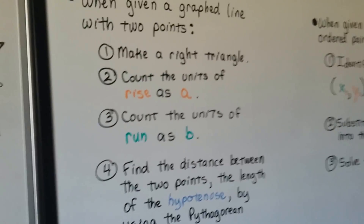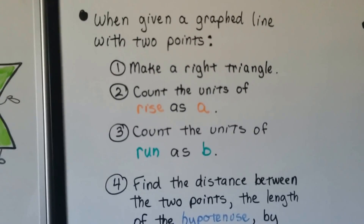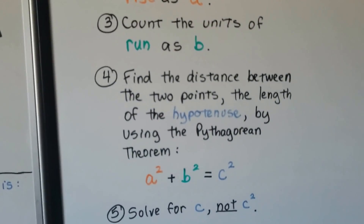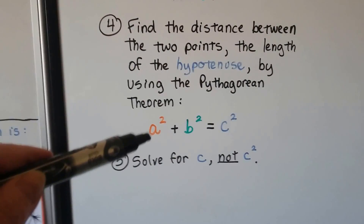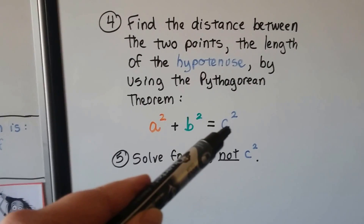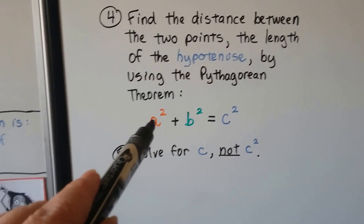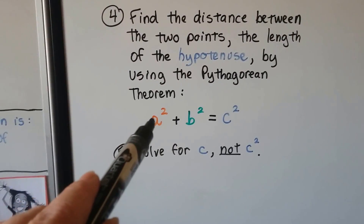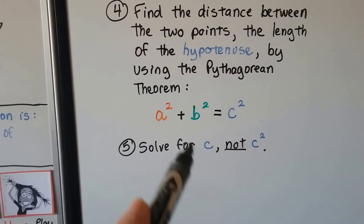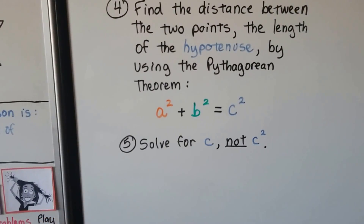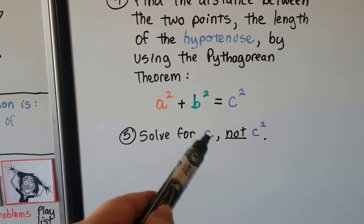In a nutshell, to find the distance between two points when given a graphed line on a coordinate plane, we make a right triangle, count the units of rise as A, count the units of run as B, and find the hypotenuse using the Pythagorean theorem: a² + b² = c². Remember, you're solving for C, not C squared — C is the actual length of the hypotenuse.